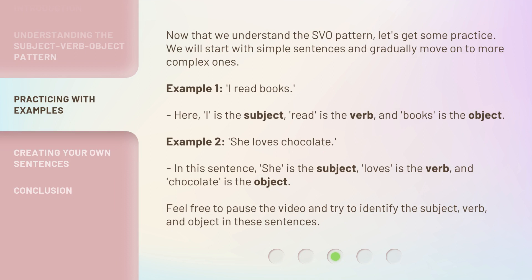Now that we understand the SVO pattern, let's get some practice. We will start with simple sentences and gradually move on to more complex ones. Example 1: 'I read books.' Here, I is the subject, read is the verb, and books is the object.